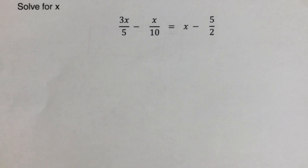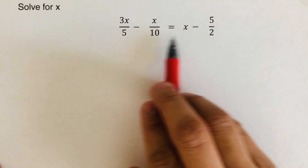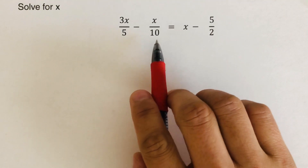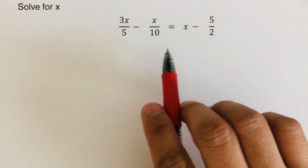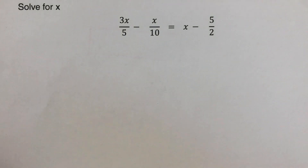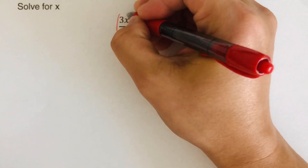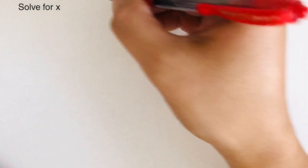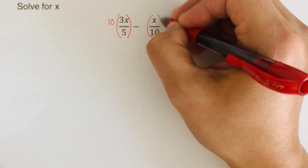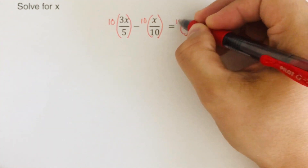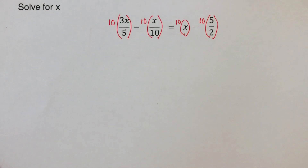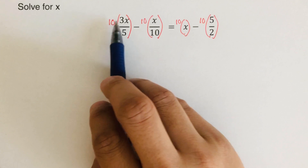Now let's go over the second problem. First, determine the LCM of 5, 10, and 2. We need a number divisible by all three giving whole numbers — that is 10. So we multiply each term by 10. Remember: only multiply the numerator, not the denominator. So 10 times 3x gives 30x over 5.